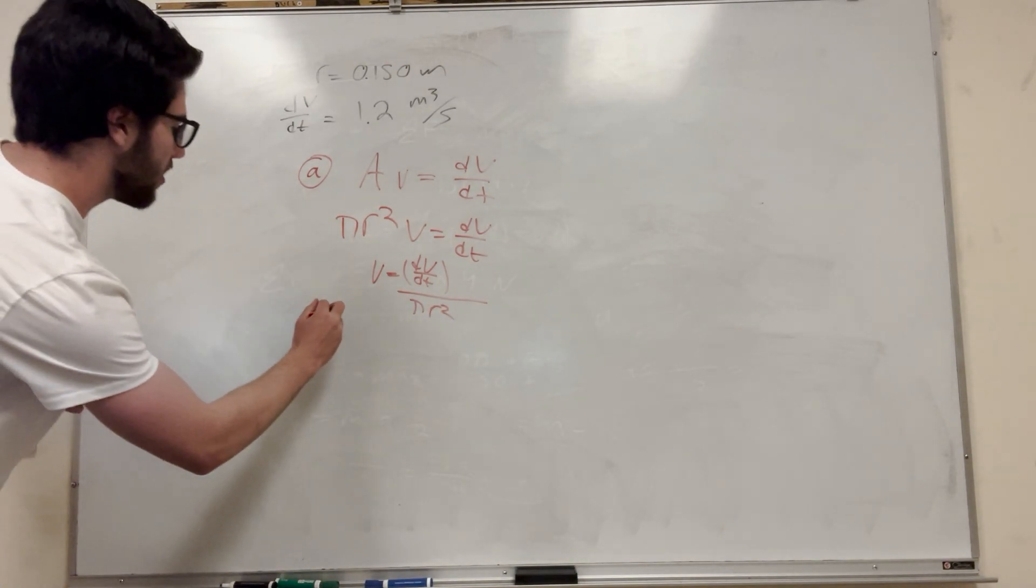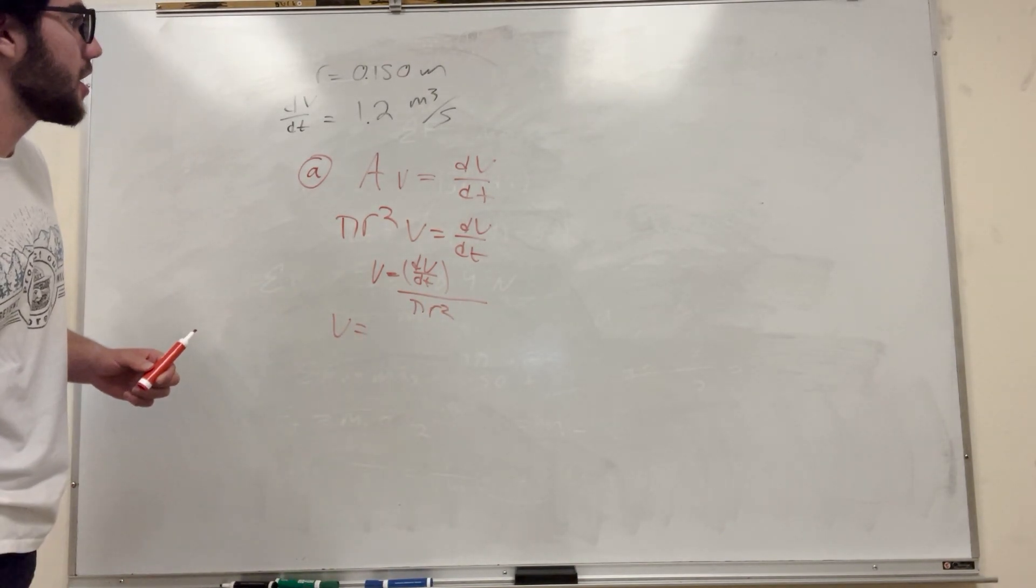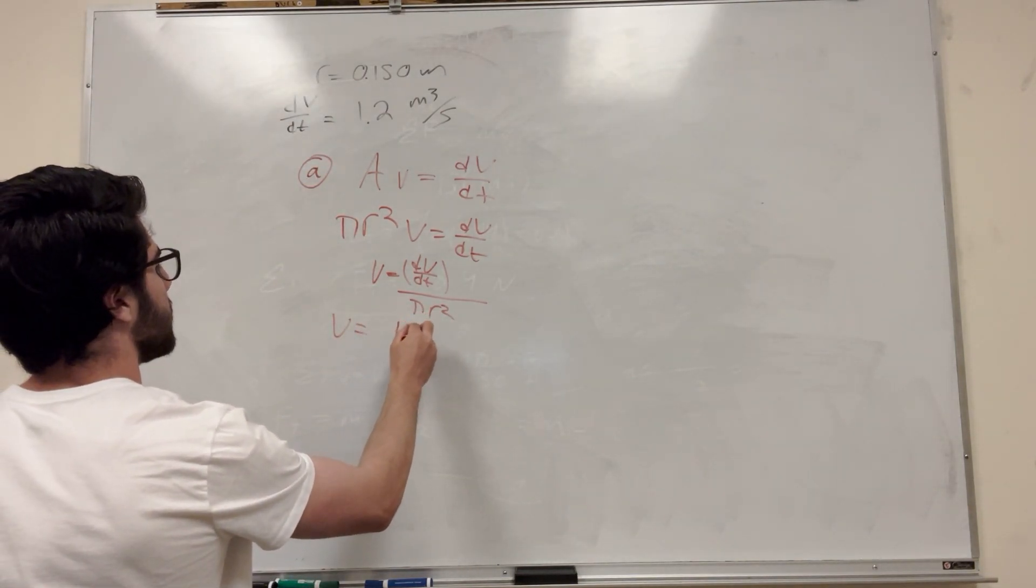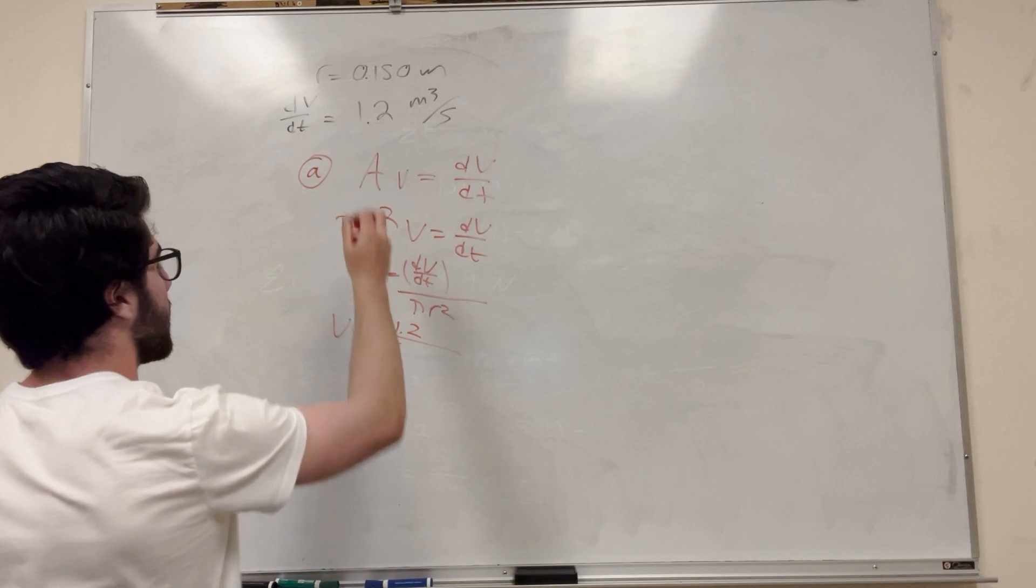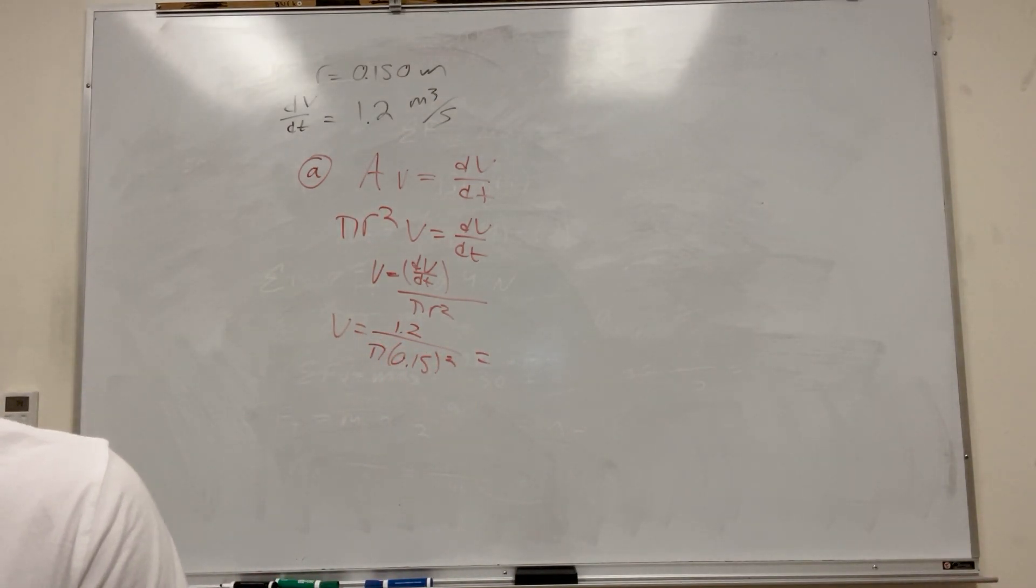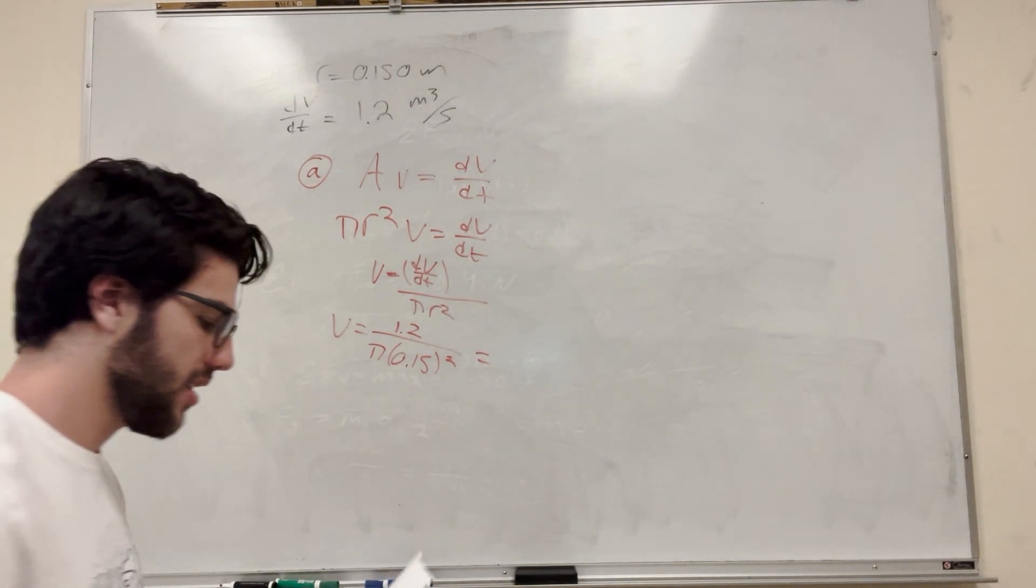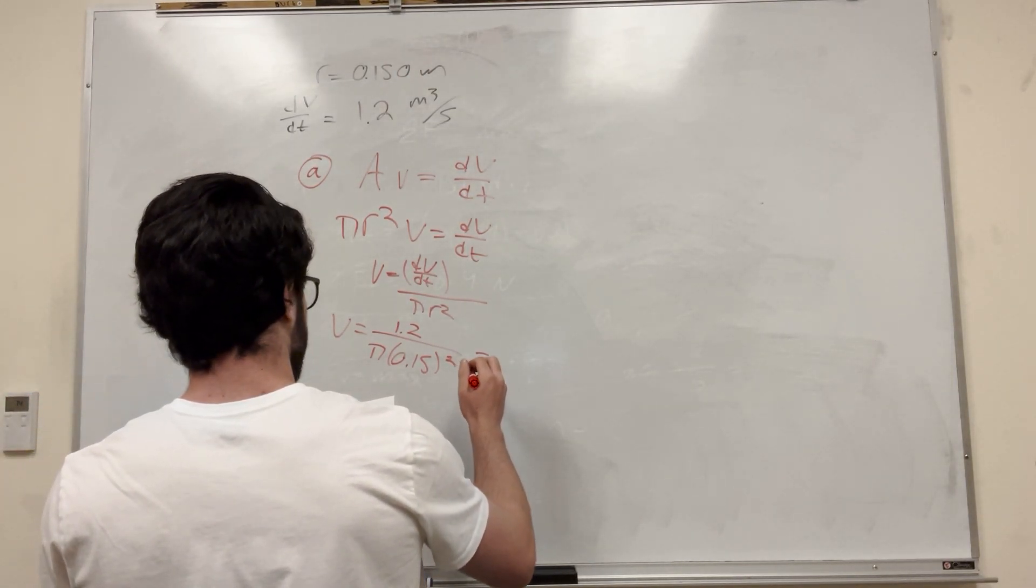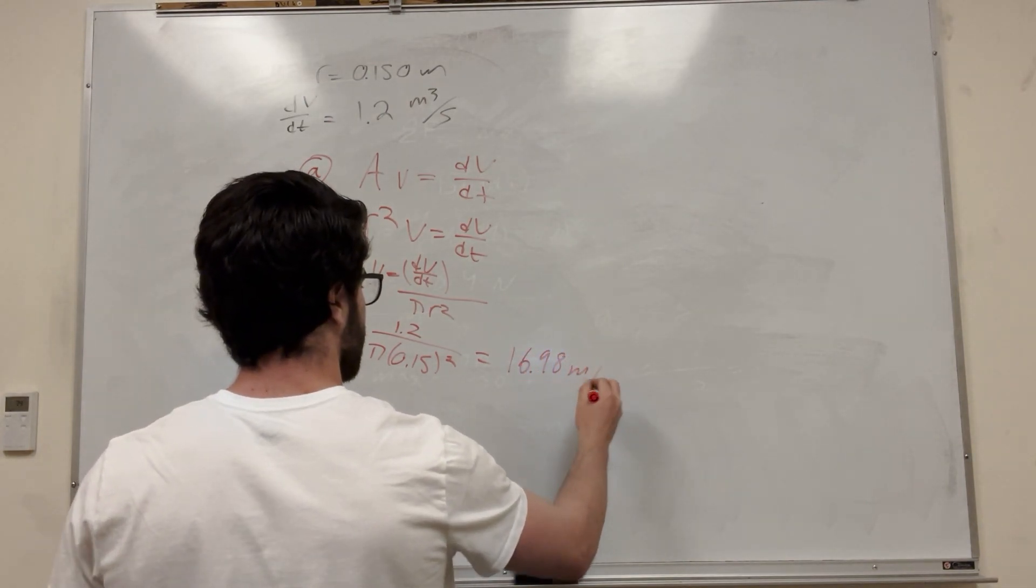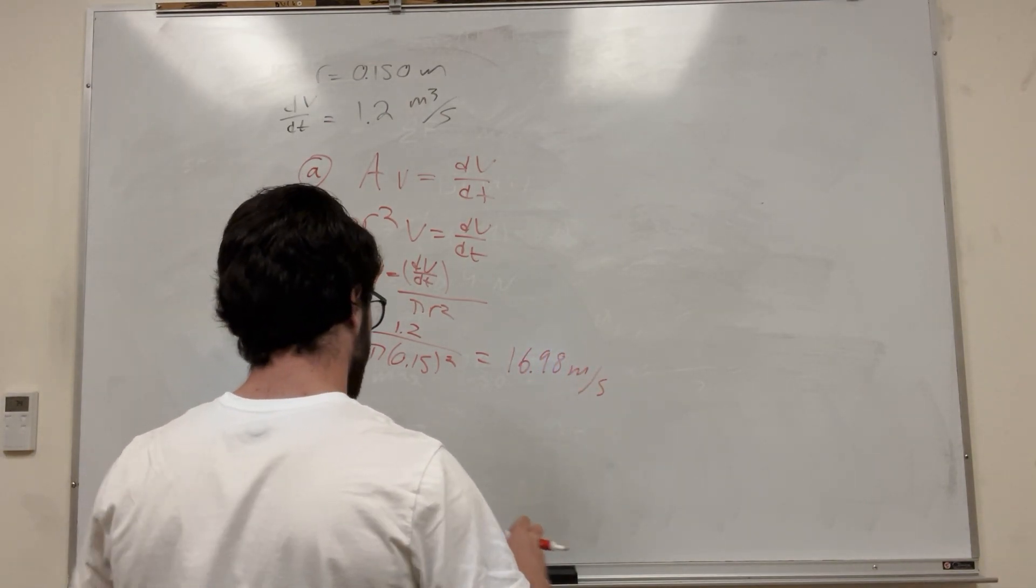So we have everything. The velocity is 1.2 divided by π times the radius 0.15 squared. You solve this to get 16.98 meters per second. That's the velocity that it flows in with.